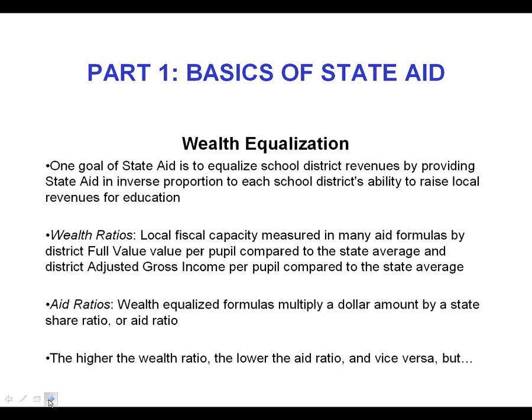I picked one key concept for state aid because it really applies almost across the board, certainly in terms of the proportion of state aid allocated based on this concept. It's very high and worth going over in some detail. That concept is wealth equalization. The idea is that one of the goals of the state paying aid is to equalize revenues by providing state aid in inverse proportion to each school district's ability to raise revenues locally for education.